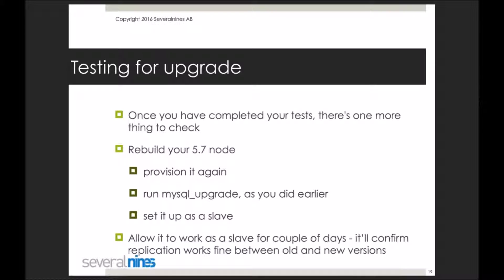Let it run for some time — a couple of days. This step is here to make sure that your 5.7 node can correctly replicate from your 5.6 master. Most of the time that will be the case, as new version replicating from old version is a supported setup. But it's better to be safe than sorry, spend those days watching replication, rather than end up with half your slaves upgraded and replication breaking on every single one of them.